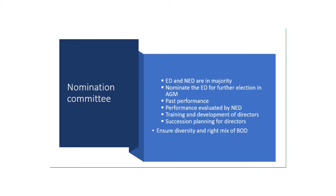Next is the nomination committee. The nomination committee plays a very big role in the effectiveness of the board. The nomination committee first looks at the ratio of executive directors and non-executive directors on the board. They always want the NEDs' ratio to be higher; ideally it is 50-50, but since the chairman of the board is also a NED, the NED ratio becomes slightly higher than the executive directors.